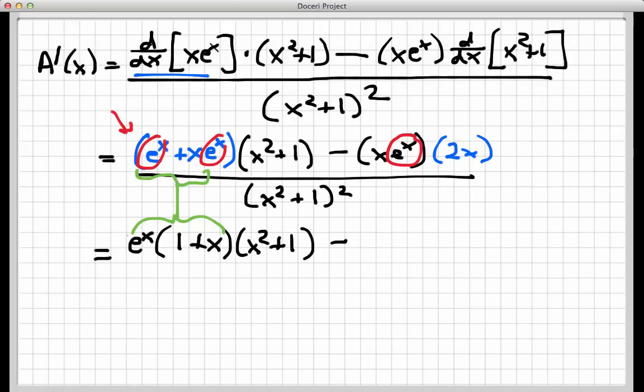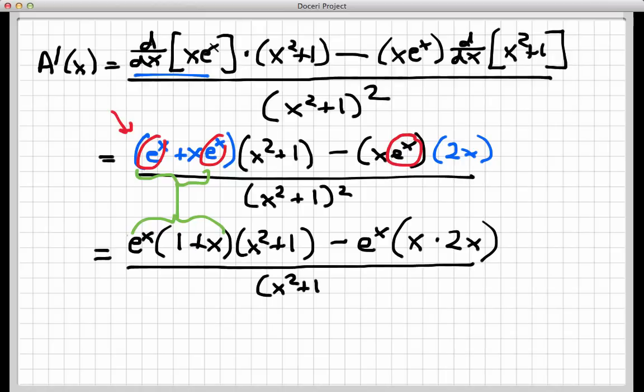Again, this expression here is equal to this expression here. I'm just factoring out an e to the x. Minus, and then there's an e to the x in the second term as well. I'm going to factor it out, and I'm left with x times 2x. Again, this is a video, not a live lecture. So if that didn't make sense or you want to see it again, just pause it and replay it and ask a question of your instructor or on the discussion board if you have it.